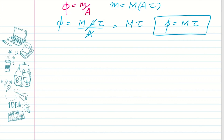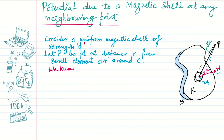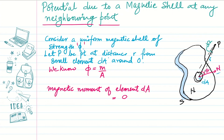Now let's find the potential due to a magnetic shell at any neighboring point P. Consider a magnetic shell of strength phi. Let P be a point at a distance r from a small element dA around O. This is the normal, making an angle theta with OP, and omega is the solid angle for this small element dA. The magnetic moment of element dA is phi times dA.